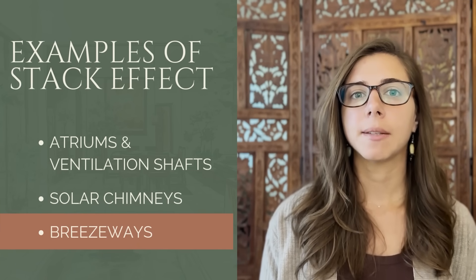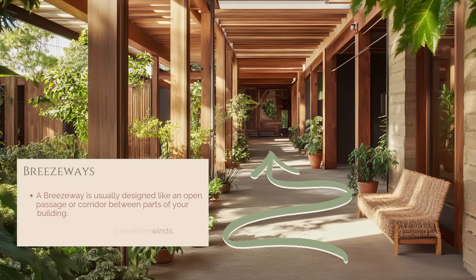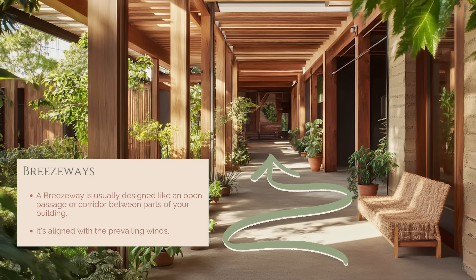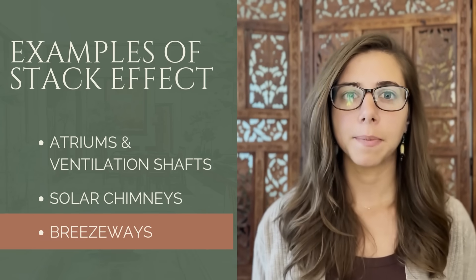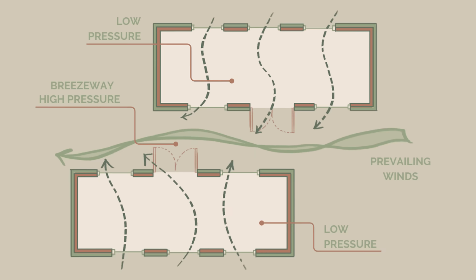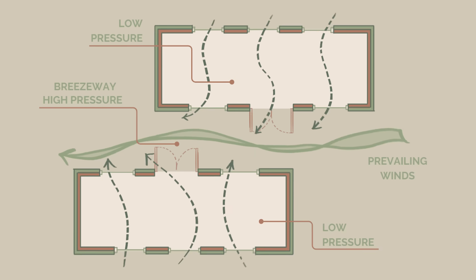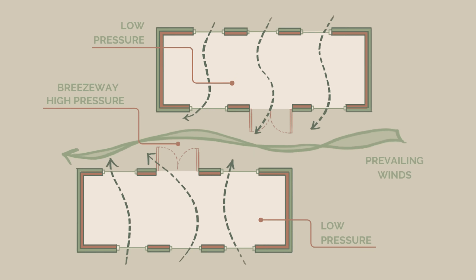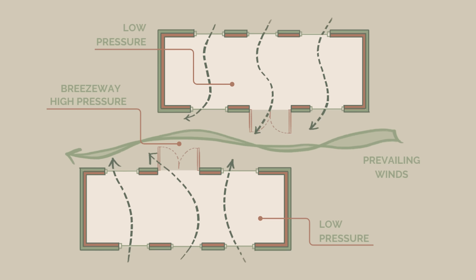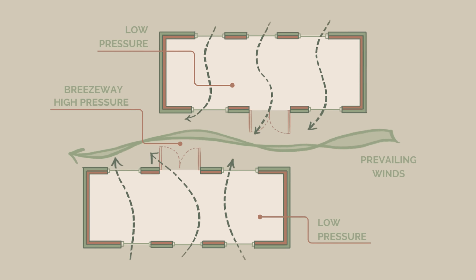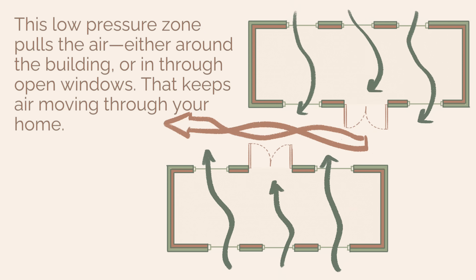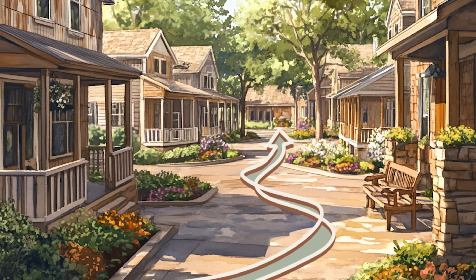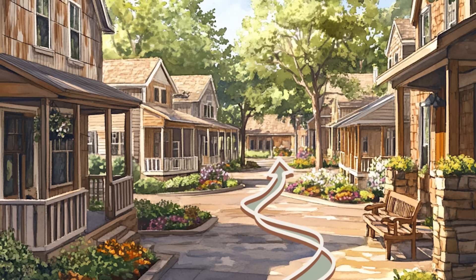A breezeway is usually designed like an open passage or corridor between parts of your building, though it can take other forms. It's aligned with the prevailing winds, so the wind hits one side of your building, a low pressure zone forms on the other side, and this low pressure zone pulls the air either around the building or in through open windows, keeping air moving through your home.